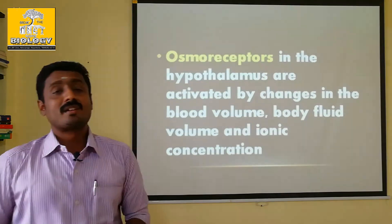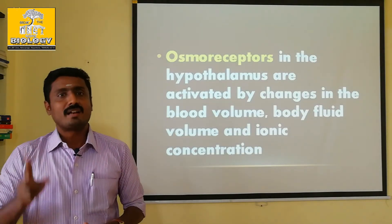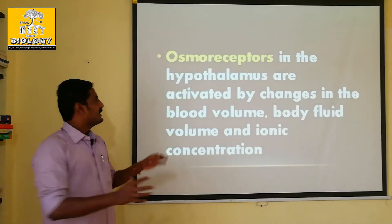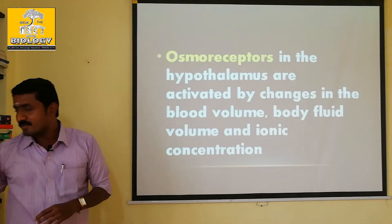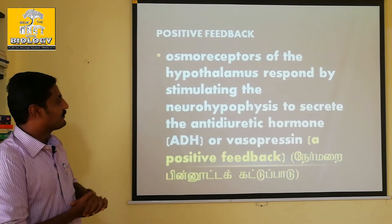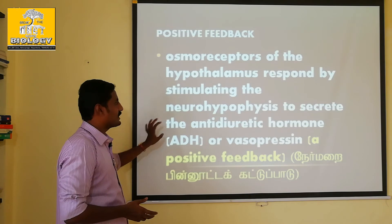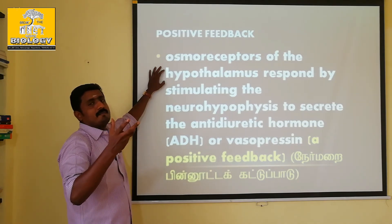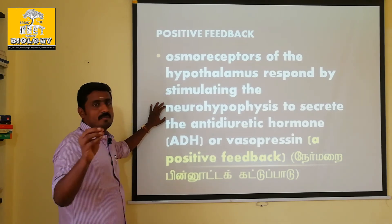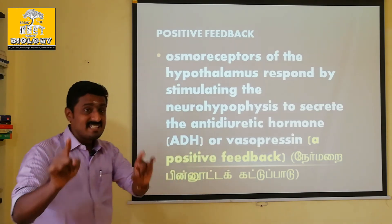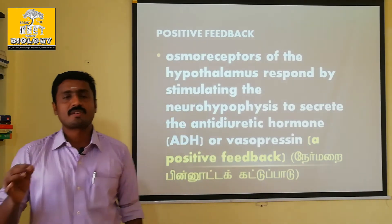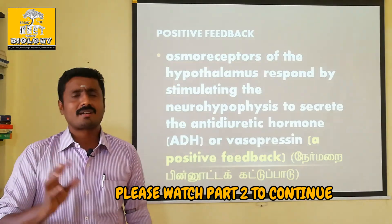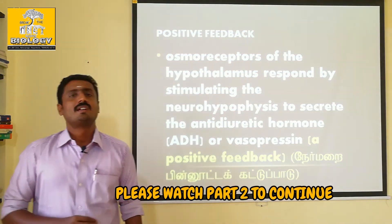If you want to drink water or juice, if you want to drink juice or tea, then you can change the concentration. Osmo receptors respond by stimulating the neurohypophysis to secrete antidiuretic hormone. Osmo receptors activate the hypothalamus, releasing factor goes to the neurohypophysis, and ADH is secreted. That means positive feedback. The feedback mechanism is placed in the hormones.